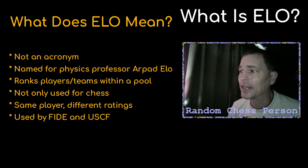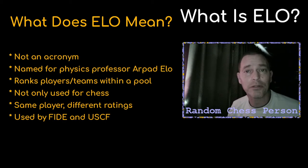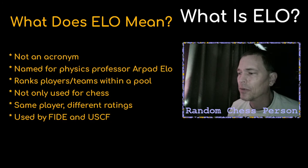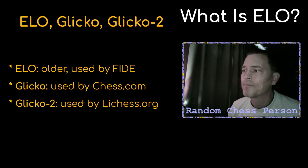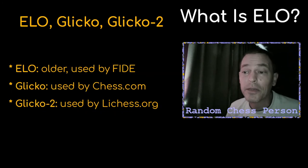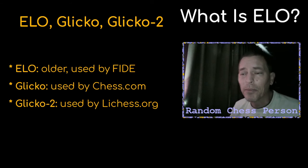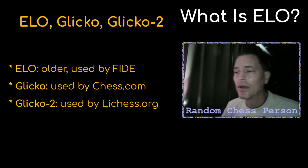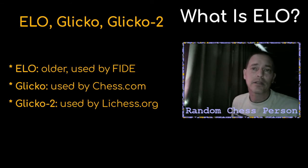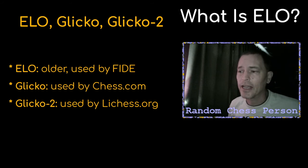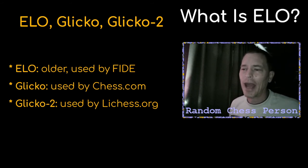I found out that Chess.com and Lichess do not use ELO. They actually use what's called the Glicko system, which was developed later. Glicko was invented by Mark Glickman as an improvement to ELO. The main difference I found is what's called RD, or Ratings Deviation, which measures the accuracy of each player's rating.